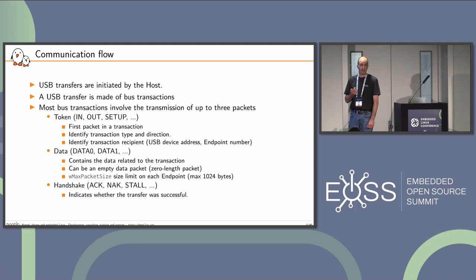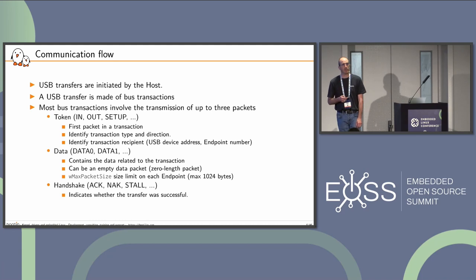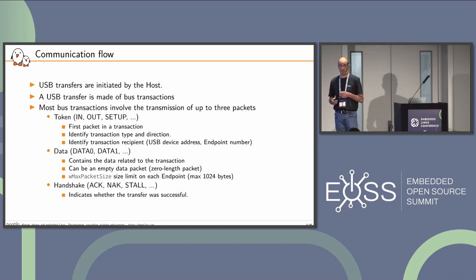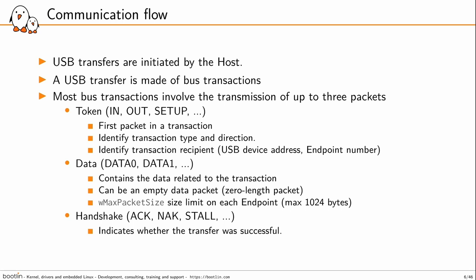You can have data packets carrying the data related to the transaction. We can have empty data packets called zero-length packets. We also have the upper limit — the max packet size — which is the limit of the data packet attached to each endpoint. The third packet in the transaction is the handshake packet: ACK, NACK, and STALL, to indicate whether the transfer was successful or not.